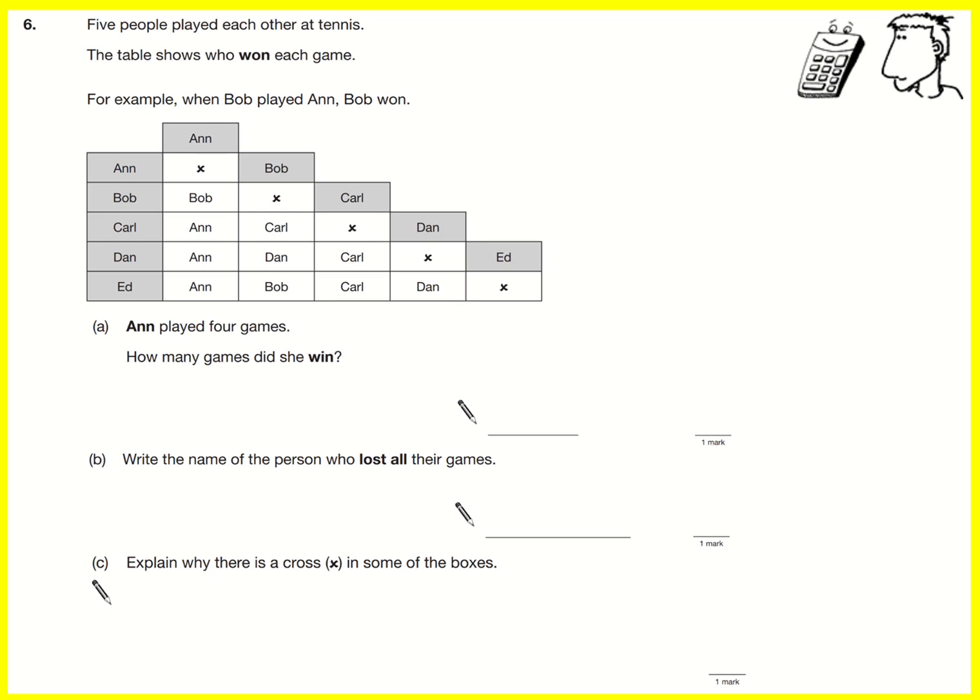Five people played against each other at tennis and this table shows who won. So we can look down the column for all of Anne's games and she played Bob and Bob won.